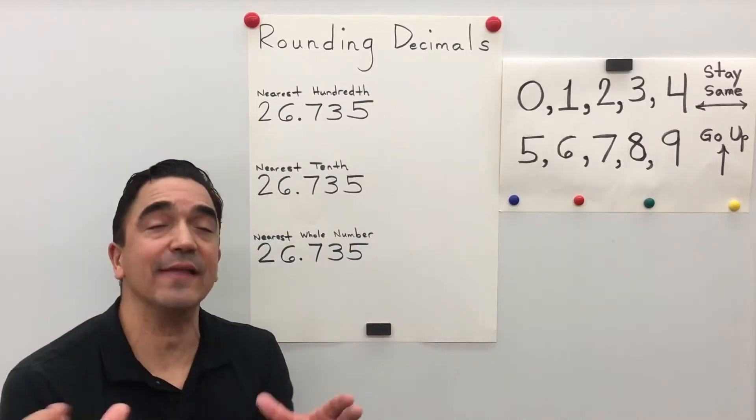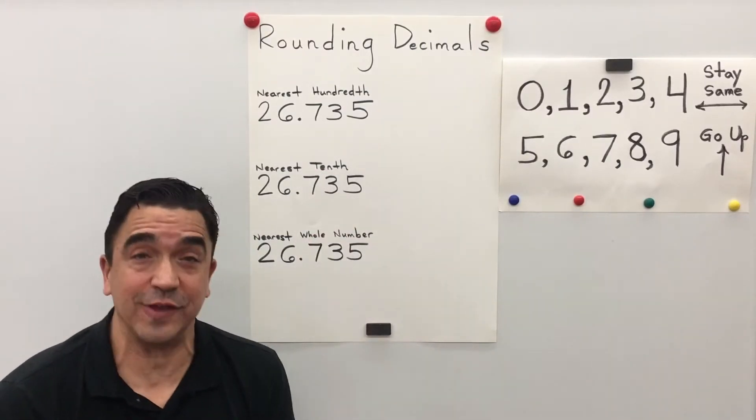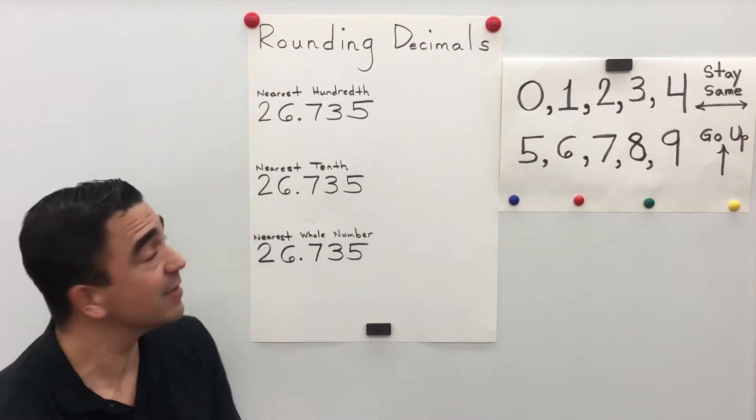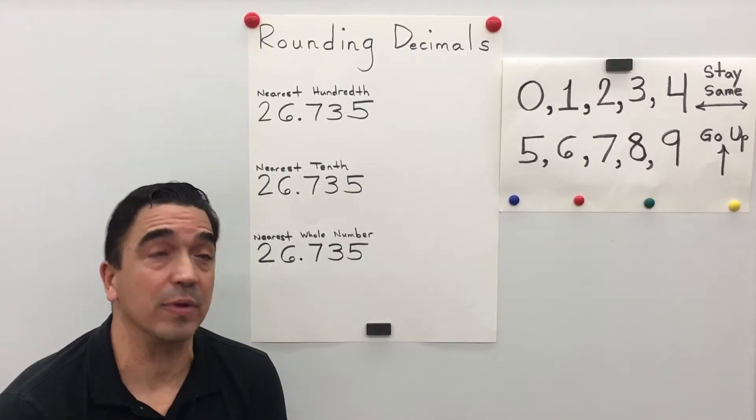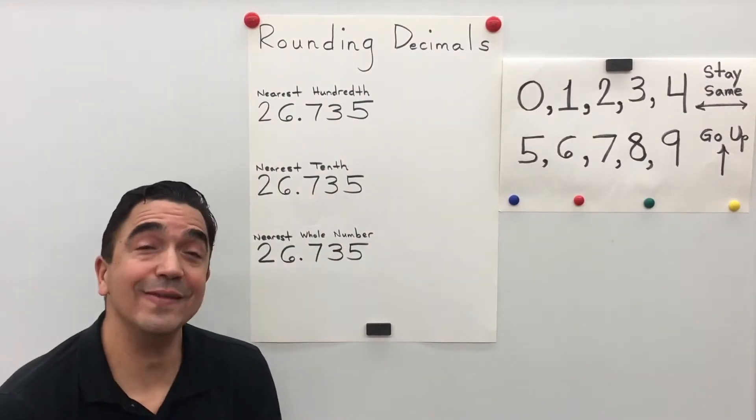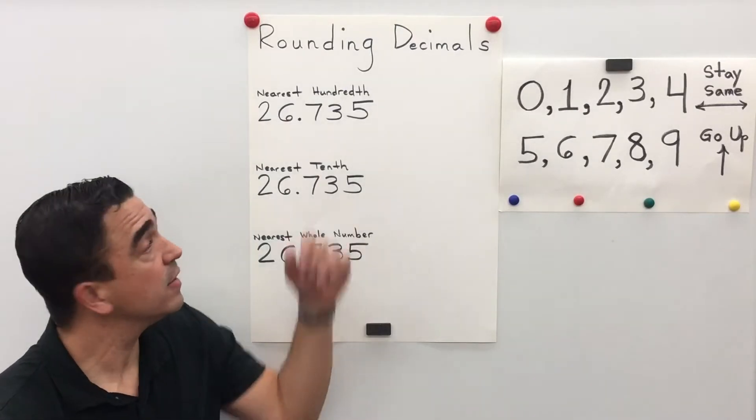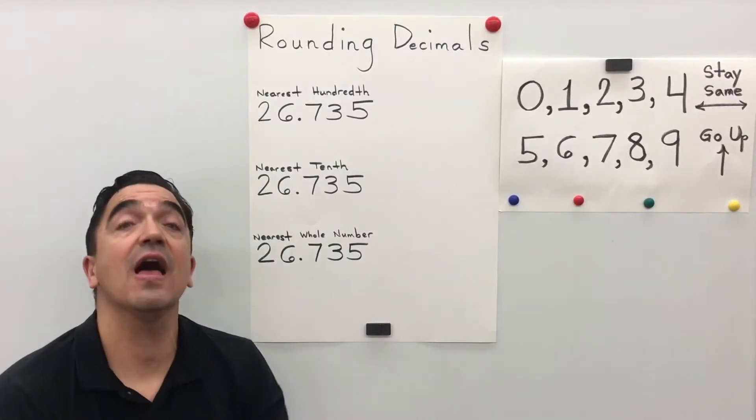Hi there, Coach Mike, and today we will be rounding decimals. Let's look at our problem: 26 and 735 thousandths.